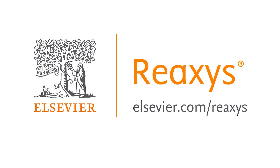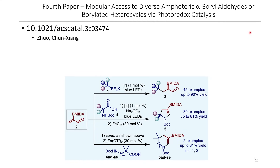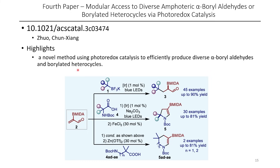The fourth paper for today involves the addition of BF3K salts into Michael acceptors containing a B-MIDA group. This is really cool because it involves the use of photoredox catalysis to install one type of boron in the presence of another type of boron species, which can then be unmasked later for subsequent transformations, or used directly. The authors also make a number of heterocycles, but the exciting part for me is the addition of these BF3K salts into the Michael acceptors to produce a number of useful products.